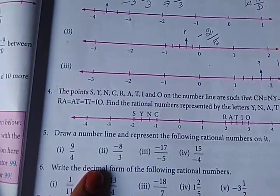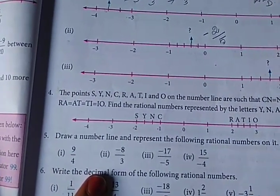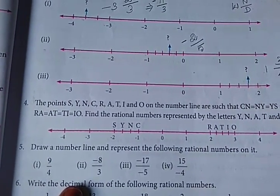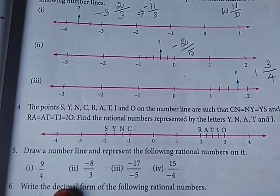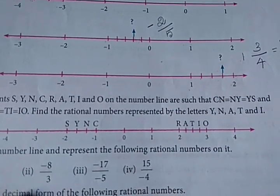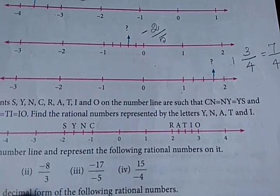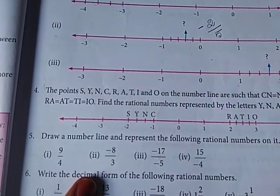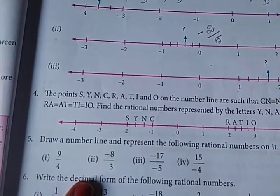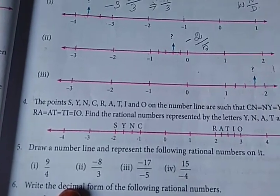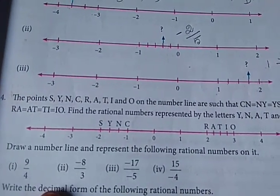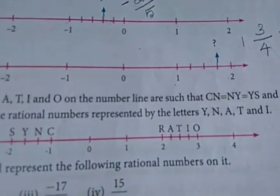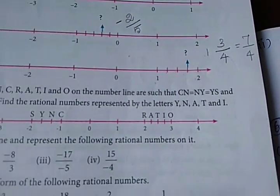So question 4, I will read the question. The points S, Y, N, C, A, R, T, I, O on the number line are such that CN equals NY equals YS, and RA equals AT equals TI equals IO. Find the rational numbers represented by the points Y, N, A, T, and I.